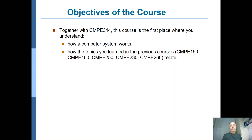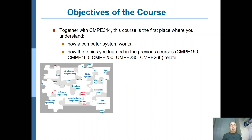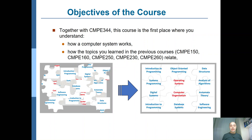You will see how the topics you have learned in the previous courses — basically CMP150, 160, 250, 230, and 260 — relate to each other. The courses you have learned up to now contained basic concepts in isolation, but through the Operating Systems course and also the Computer Organization course, CMP344, you will see that these pieces of the puzzle are now fitting together.